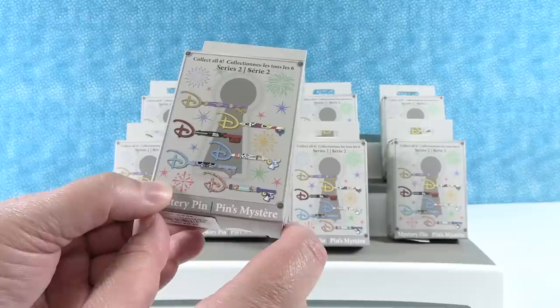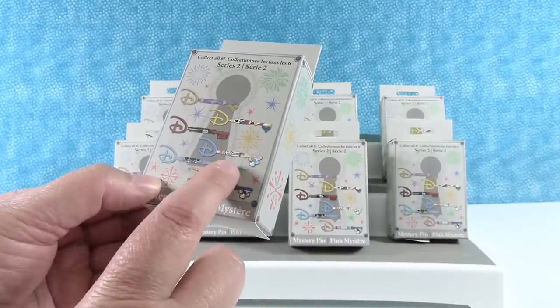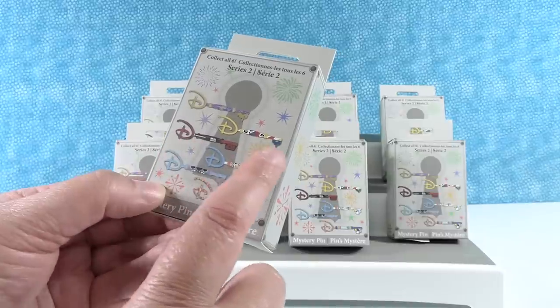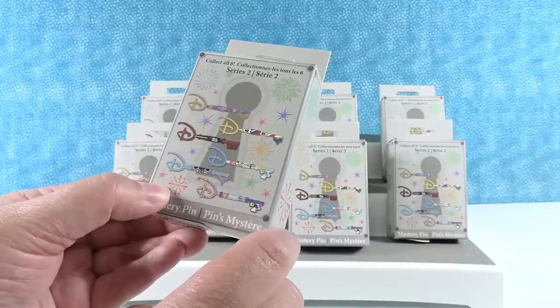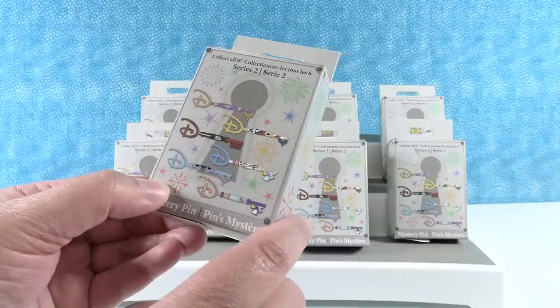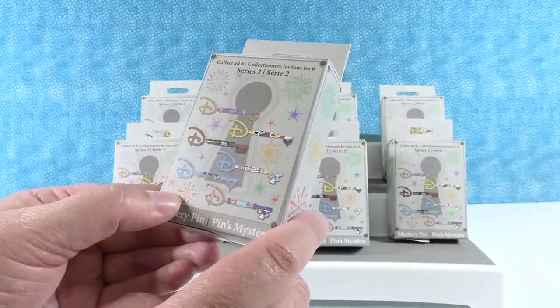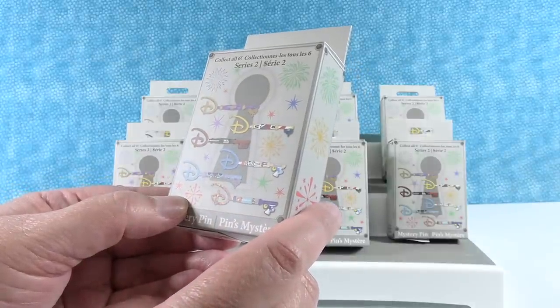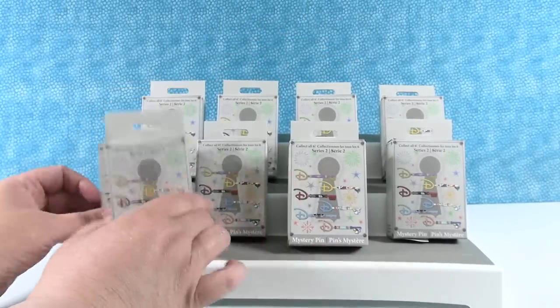So we have six different ones to collect. I don't know if any are more rare than others. Looks like we have an Up pin, Stitch, that looks like Forky, I don't know what that is. Do you know what that one is? That's a Star Wars pin I believe. And then that looks like Mickey Mouse, and then maybe Rapunzel or Aladdin. That's Aladdin, it's got the lamp. Oh yeah, it does have a lamp. So we are hoping to find all six. We have ten packs. Paul's going to start us off.